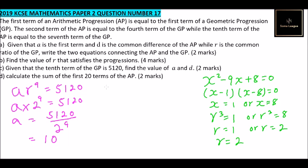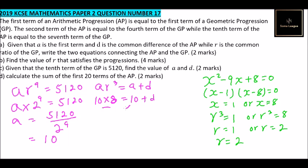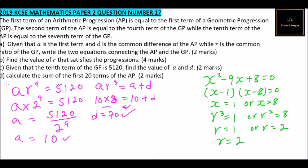Now we find d. We use the fact that the fourth term of the GP equals the second term of the AP: a·r³ = a + d. Substituting a = 10 and r = 2: 10 × 2³ = 10 + d, so 10 × 8 = 10 + d, giving 80 = 10 + d. Therefore d = 70. So a = 10 and d = 70. That completes Part C.